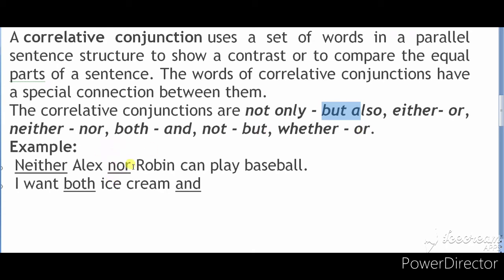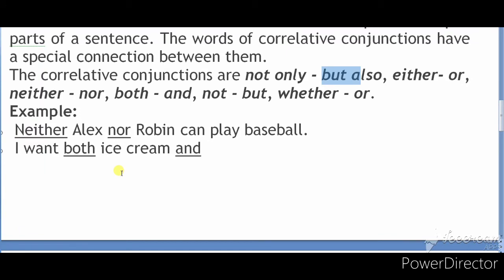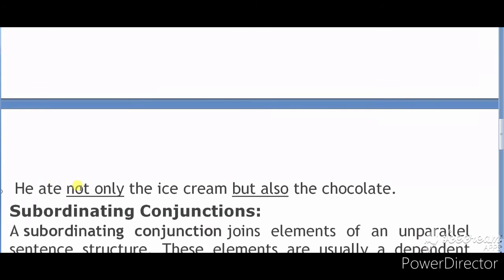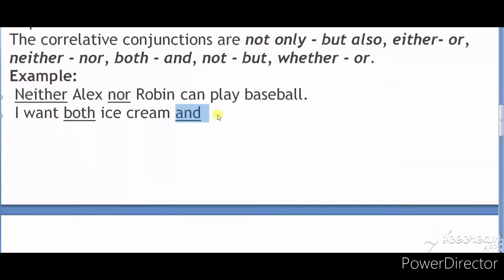The examples of these are: 'Neither Robin nor Alex can play basketball.' Here we have 'neither...nor'. Another example: 'I want both ice cream and chocolate.' Here 'both...and' is your correlative conjunction.